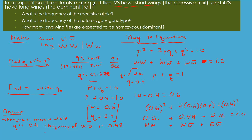Lastly, how many are long-winged? The long-winged flies include both homozygous dominant and heterozygous individuals. Our total population is 566. Adding their frequencies: 0.36 + 0.48 = 0.84, or 84%. Multiplying 0.84 × 566 gives us 475 long-winged flies.